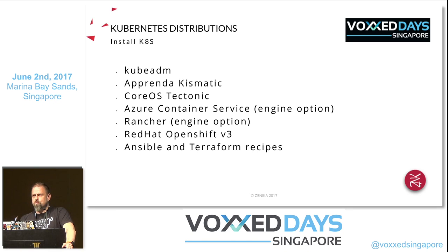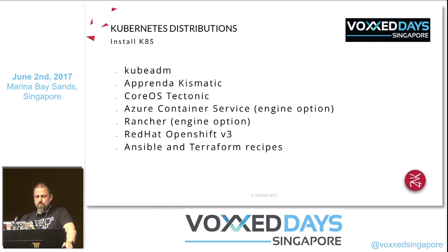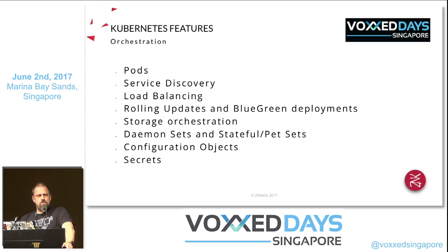How to install Kubernetes: kubeadm is a command line that lets you set up a cluster and is provided with Kubernetes. There are commercial distributions like Apprenda's Kismatic. CoreOS offers Tectonic — a commercial version that's free for under ten nodes. You can also use Azure Container Services, Rancher, or the OpenShift distribution by Red Hat. Ansible and Terraform also work for installation.